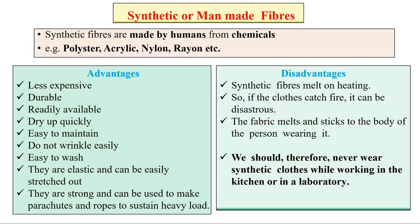Synthetic fibers are made by humans from chemicals — for example, polyester, acrylic, nylon, and rayon. There are several advantages: they are less expensive, durable, readily available, dry quickly, easy to maintain, do not wrinkle easily, easy to wash, and are elastic and can be easily stretched.